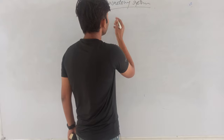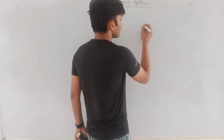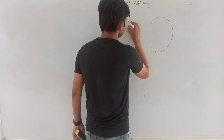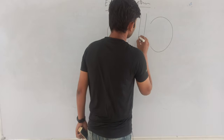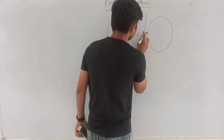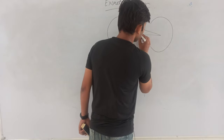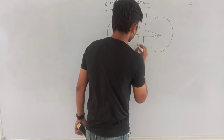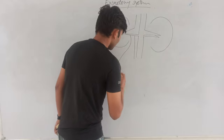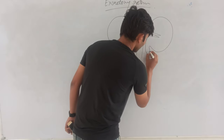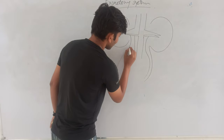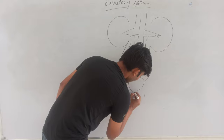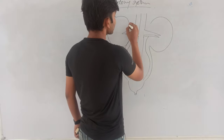The excretory system is made of some important organs. I am going to draw the diagram, and then we will talk about the structure. This diagram shows your excretory system. This excretory system is made of some important organs.